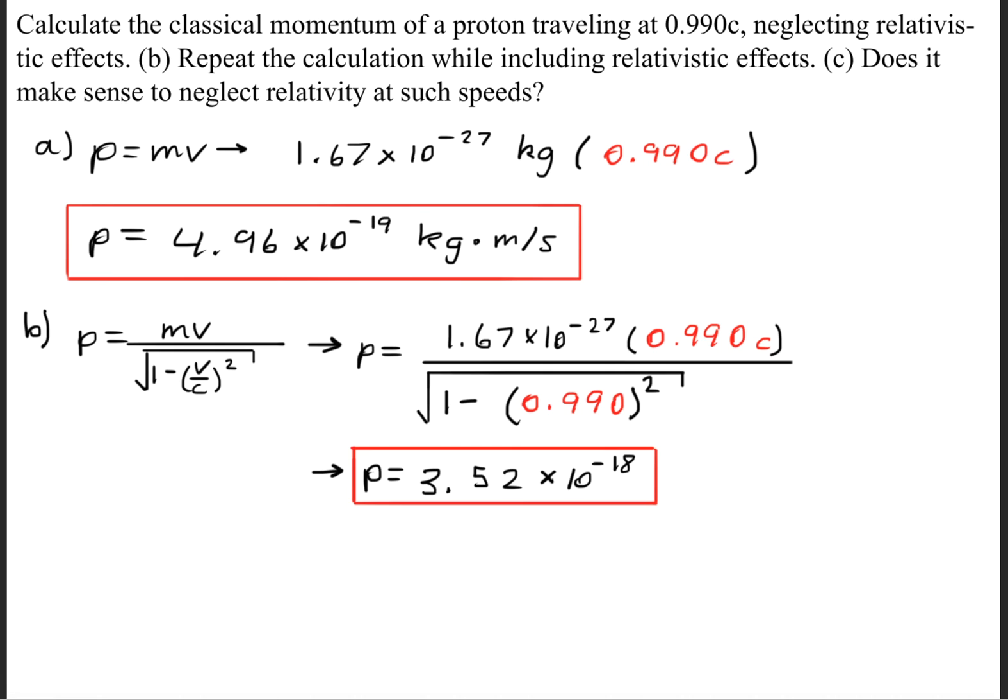Part B wants us to calculate the momentum, except we're going to be using the relativistic momentum formula. So here's the formula, and when we go ahead and solve, we'll get a momentum of 3.52 times 10 to the negative 18th kilogram meters per second.